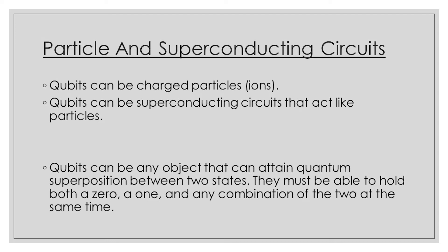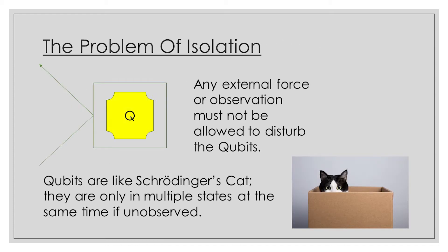Whether atoms or superconducting circuits are used, however, an underlying issue presents itself. The state of quantum superposition, whether it be displayed by an atom or a superconducting circuit, is incredibly fragile. This is the problem of isolation.